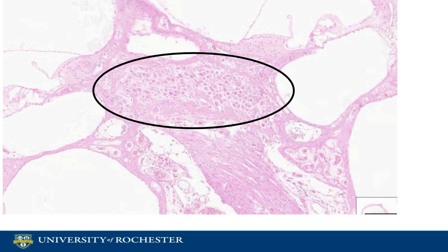To summarize, the cochlea is an essential part of the auditory system. It plays a significant role in translating sound waves and vibrations into information sent to the brain.